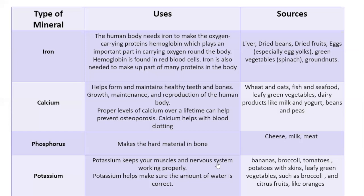Now we're going to start our notes for the day. Put 'Types of Minerals' as the heading and underline it. You're going to have a table with three columns: Types of Minerals, Uses, and Sources — where do we find them.